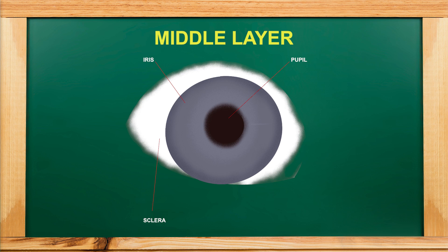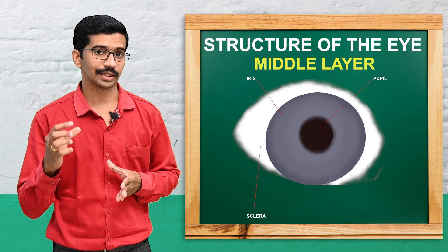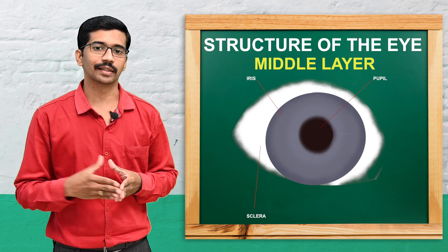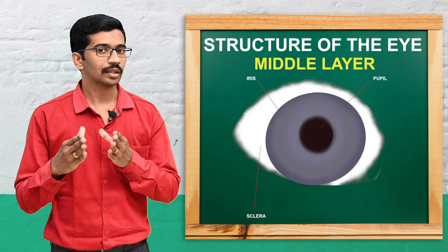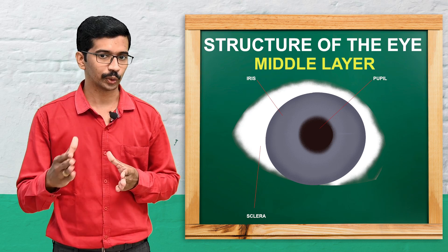The ciliary body is an anterior continuation of the choroid and contains the ciliary muscles, to which the suspensory ligaments of the lens are attached. There are also specialized epithelial cells in the ciliary body which secrete a fluid called aqueous humor, which flows into the anterior chamber of the eyeball.